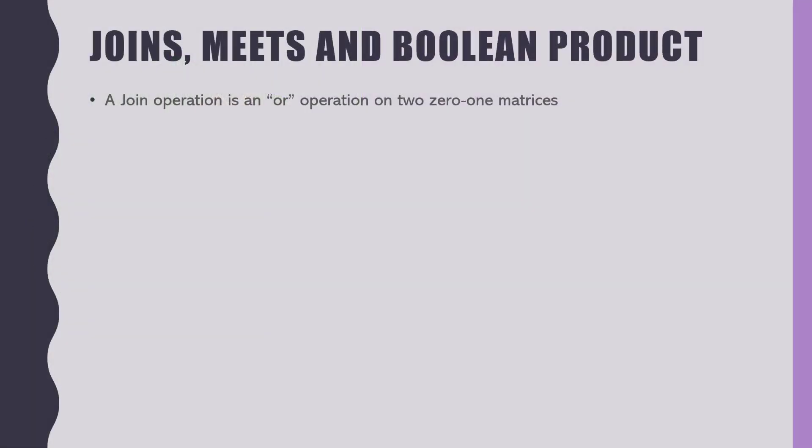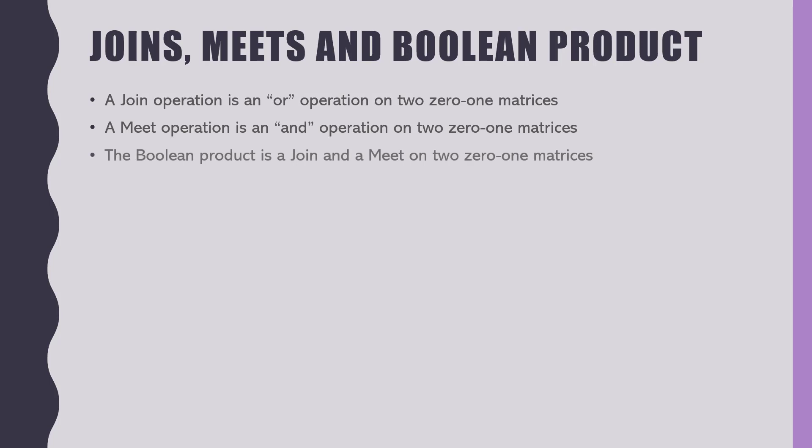Let's talk about joins, meets, and the boolean product. The join is just an OR operation on two zero-one matrices. A meet is an AND operation on two zero-one matrices. The boolean product is a combination of the two.